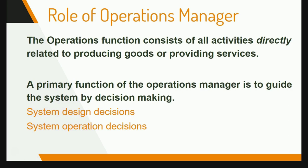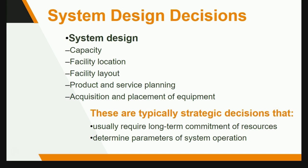The role of the operations manager: the operations function consists of all activities directly related to producing or providing goods and services. A primary function of the operations manager is to guide the system by decision making — system design decisions and system operation decisions. System design decisions include capacity, facility location, facility layout, product and service planning, and acquisition and placement of equipment. These are typically strategic decisions that require long-term commitment of resources. For example, deciding whether to lease or buy the land on which to build your factory — you need to determine the parameters of system operation.